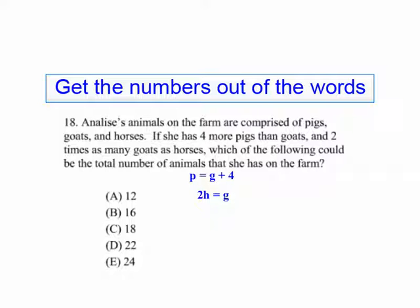Let's start with goats because it seems that they're orienting us to the goats. If the pigs equals the goats plus four and two times the horses are the goats, the horses would equal one half of the goats.